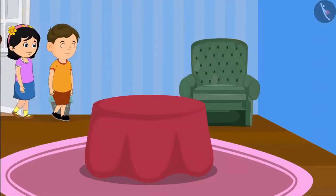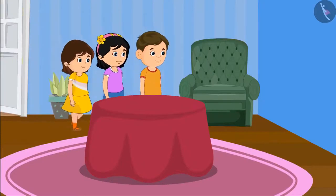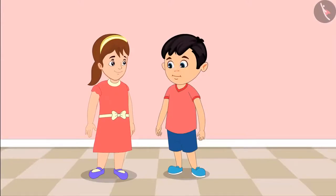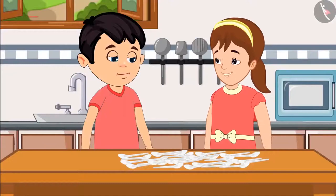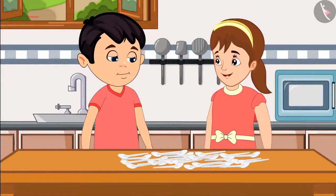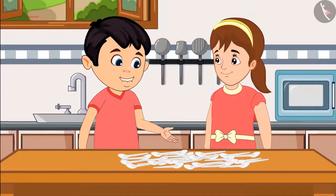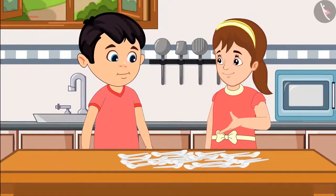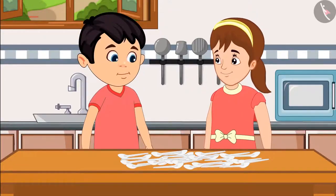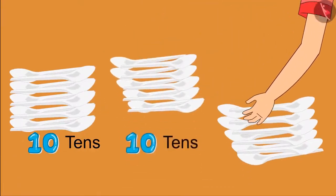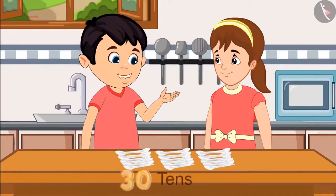It's evening now and guests are coming to Chotu's house. Chotu and Aarti are serving the guests. Aarti asks where the spoons are kept. Chotu replies he has kept all the spoons in the kitchen. Aarti asks how many spoons there are, and Chotu says: 'I have taken 30 groups of 10 spoons from the shop.' But 30 groups are a lot, and these spoons seem very few. Come on Chotu, let's count them again, dividing into groups of 10. Chotu counts: 10, 10, and another 10 — so this is a total of 30 tens.